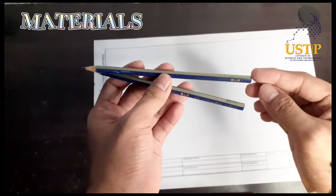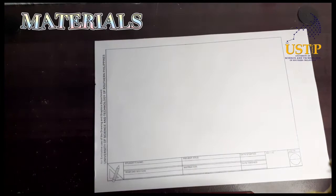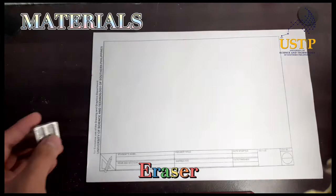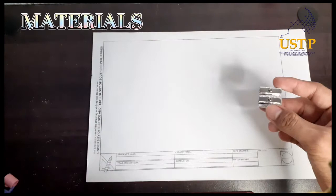And of course, the pencils, the 2H and HB pencil. The 2H is for the thin lines and the HB pencil is for the thicker lines. Next, we have these rulers and the T-square. And next, we have this eraser in case we have to erase something and the sharpener for us to sharpen the pencils.